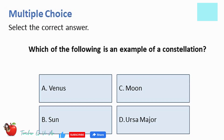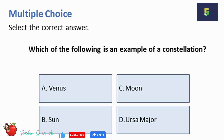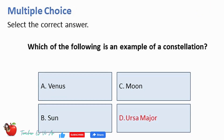Multiple choice, select the correct answer. Which of the following is an example of a constellation? A. Venus. B. Sun. C. Moon. D. Ursa Major. The correct answer is D — Ursa Major.